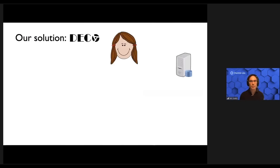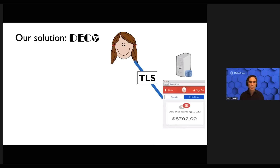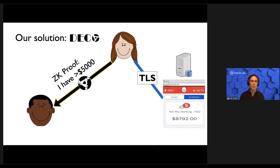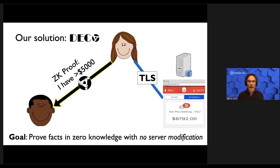Our solution to this problem is a system called Deco. What Deco aims to do is liberate this data so it can be used in blockchain systems and elsewhere. Specifically, we want a user to be able to log into a website via TLS and then prove statements about the data she receives to a verifier using zero-knowledge proofs. For instance, in our banking example, we'd like Alice to be able to prove to Bob that she has more than $5,000 in her account — ideally without even revealing her bank account balance — and we'd like to do this with no modification to the server, so we can build on legacy infrastructure.